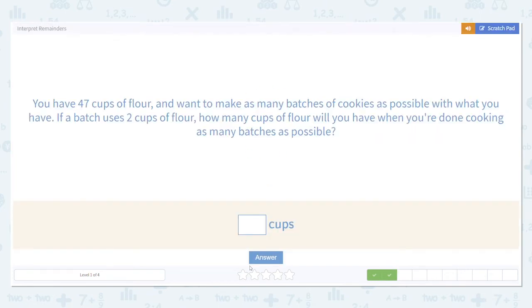Here's another example. You have 47 cups of flour and want to make as many batches of cookies as possible with what you have. If a batch uses two cups of flour, how many cups of flour will you have when you're done cooking as many batches as possible?